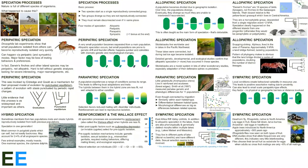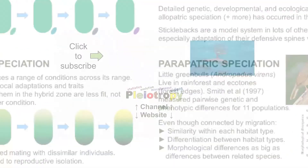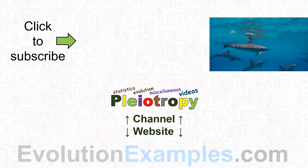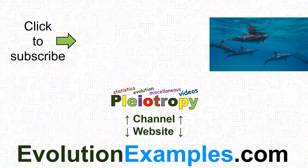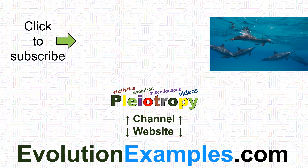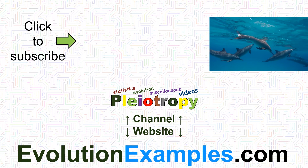Life keeps evolving, and there are several different ways that new species can arise over time. These processes have led to the fantastic diversity of living organisms we see today. A high-resolution version of this image is available at the Evolution Examples website. If you enjoyed this video, subscribe or like to easily find it and other videos about evolutionary biology in the future.